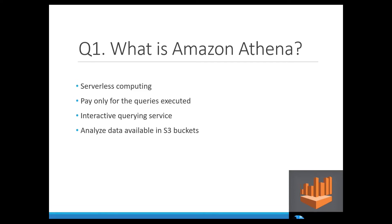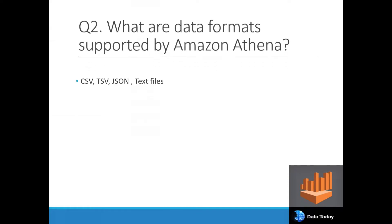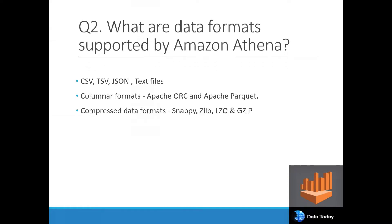The next question is: what are the data formats supported by Amazon Athena? Athena supports various data formats like CSV, TSV, JSON, and text files. These are common formats used in data engineering on AWS — for example, JSON is used frequently whether in IAM, S3 buckets, or other locations.